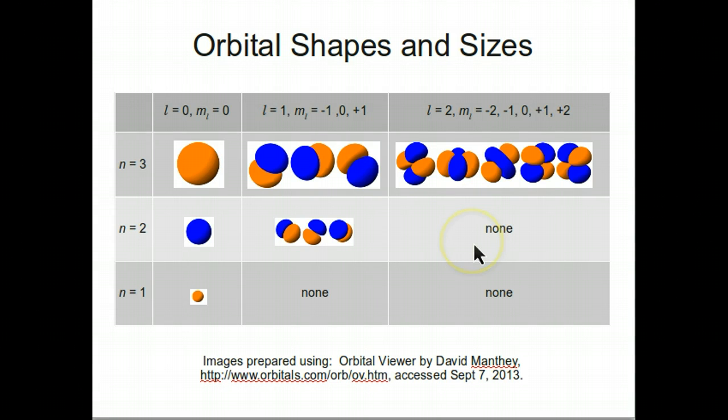The suborbitals shown represent those of a hydrogen atom. All of these orbitals are centered on the nucleus and would actually overlap. The suborbitals are shown separately here so that the relative sizes, shapes, and orientations can be clearly seen.